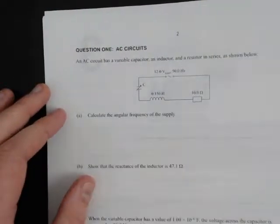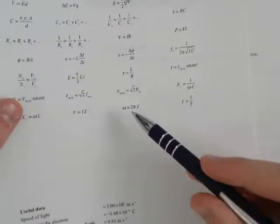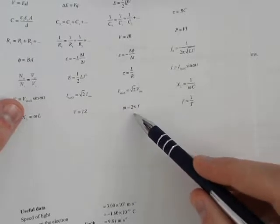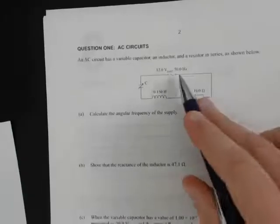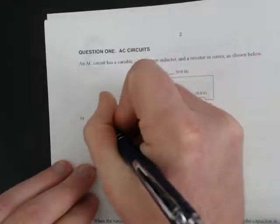Question 1A: Calculate the angular frequency of the supply. From the formula sheet, we find that angular frequency ω is equal to 2π times regular frequency. The regular frequency f is 50 Hertz.